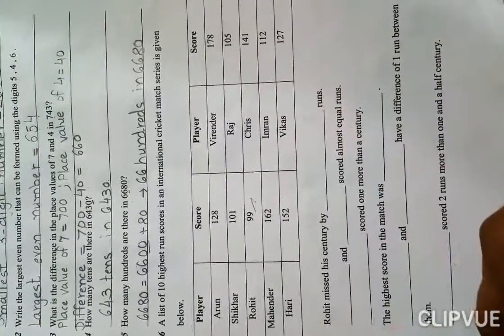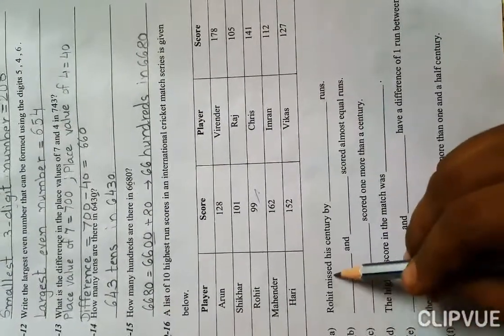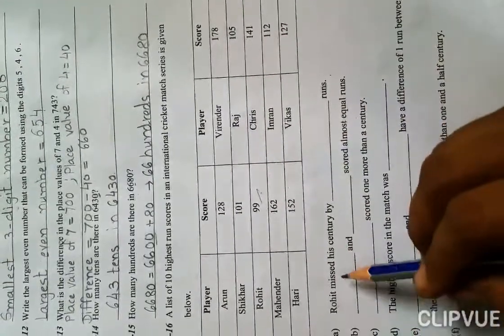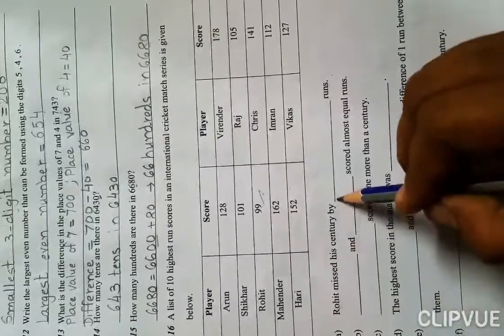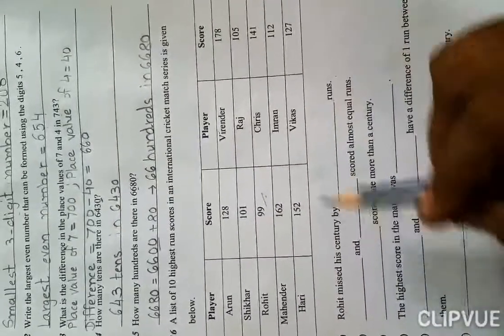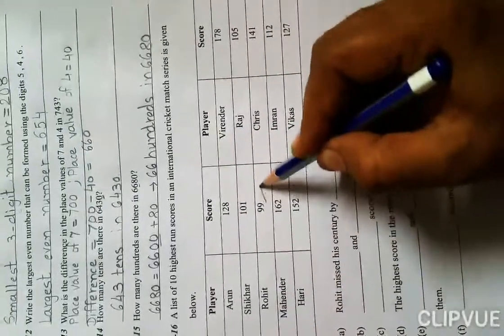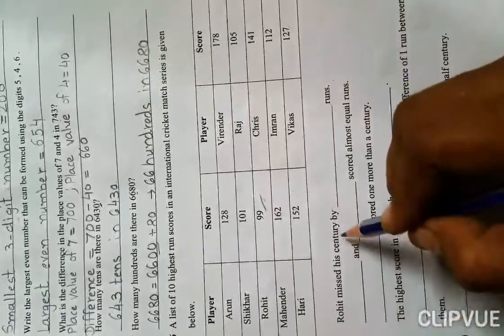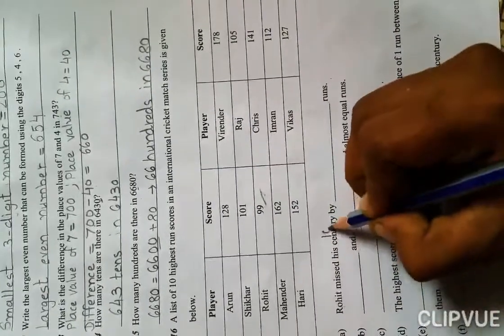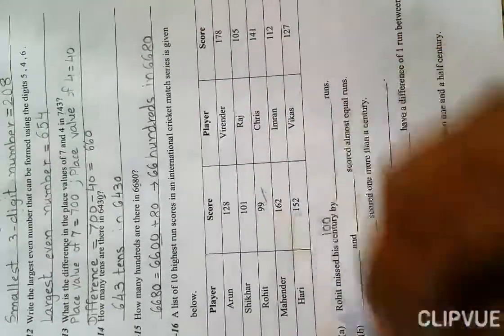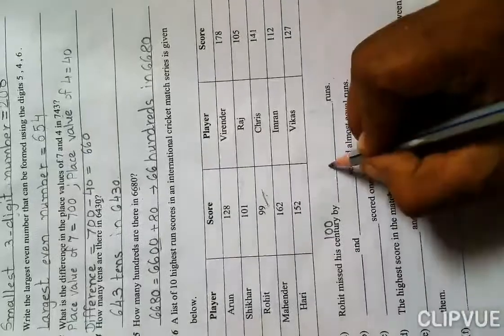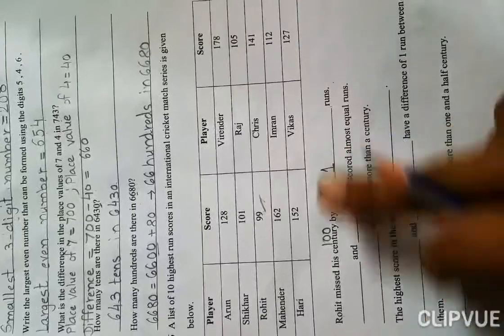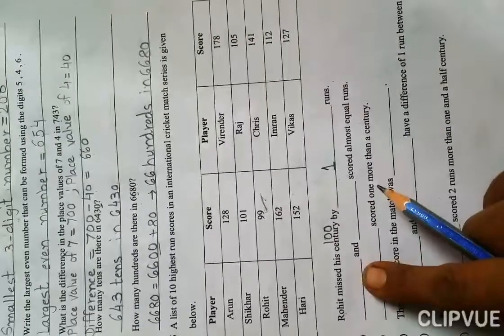Rohit missed his century by blank runs. How many runs did Rohit miss his century by? First we find Rohit here. Rohit has 99 runs. Century means 100. 99 already done, so how many runs remaining? Just one. The answer is one.